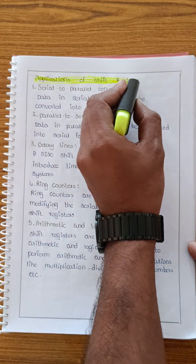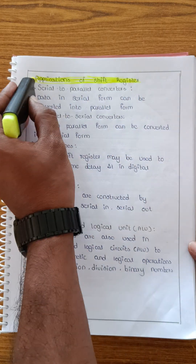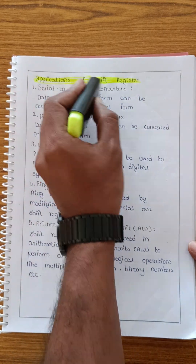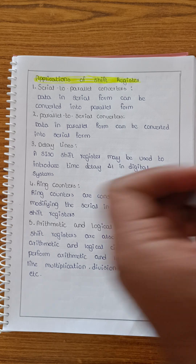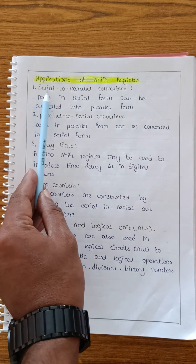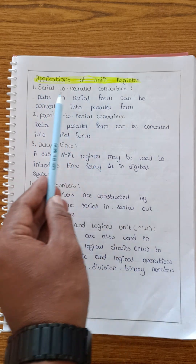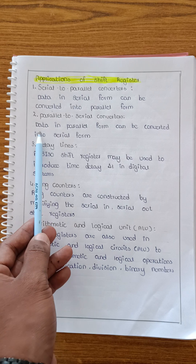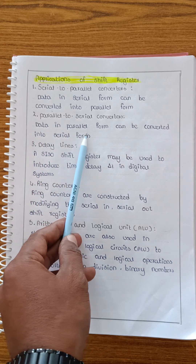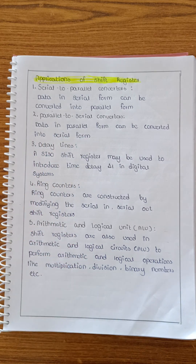The first application is serial to parallel converters. Serial to parallel converters convert data from serial form into parallel form. Shift registers are used as serial to parallel converters.